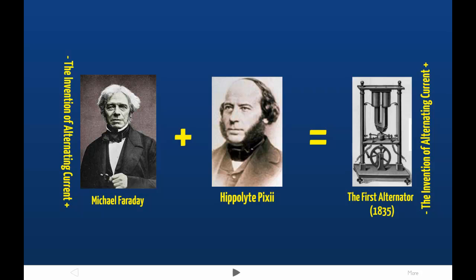While Faraday and others used this principle to create the first motors that showed you could use electricity to create movement, it wasn't until a year later that someone used movement to create electricity. In 1832, a French naturalist and maker of musical instruments, Hippolyte Pixie, put Faraday's principles to use by constructing the first mechanical generator of electricity, the Pixie machine.